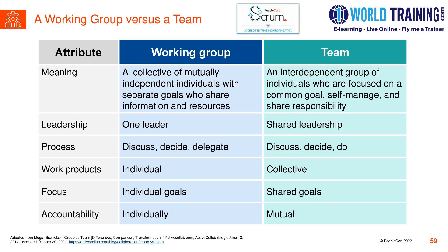In a working group, individuals discuss the situation, decide what needs to be done, and then delegate that work. So the process is: discuss, decide, and delegate. In a team, they discuss and decide, but finally they jointly take actions. So the team process is: discuss, decide, and do.